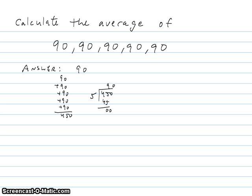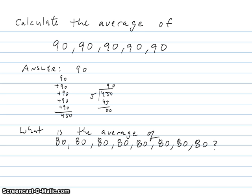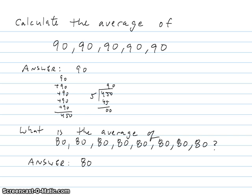What we have here is a special situation: when all the numbers are the same, the average of the numbers will just be that number. Here's a practice question — what is the average of 80, 80, 80, 80, 80, 80, 80, 80, and 80? The average of those numbers is 80. You could add up all the 80s and divide by 8, or recognize that if all the numbers are the same, the average will be that same number.